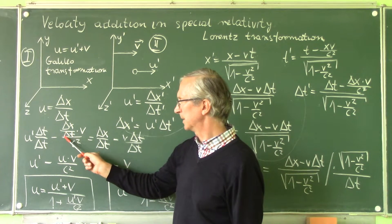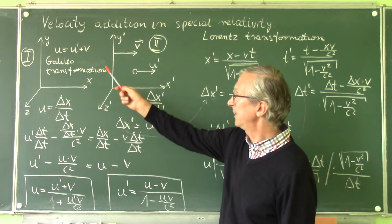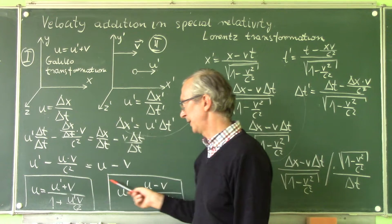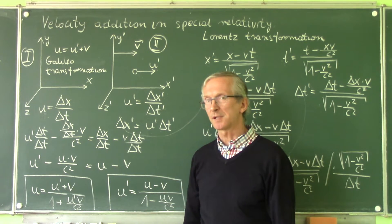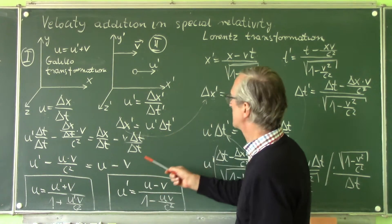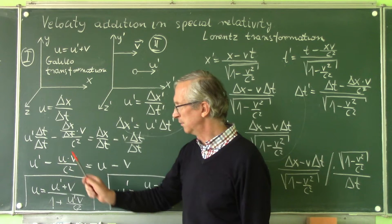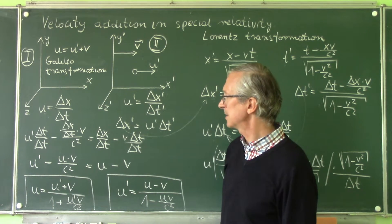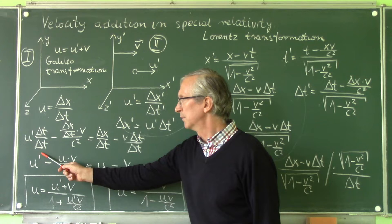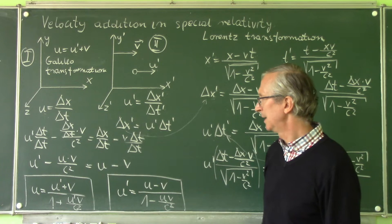Delta x divided by delta t is u — it is the velocity of this object measured in the first frame of reference. So we have this equation, and now we have almost solved our problem. It's enough to transform this equation to calculate the velocity measured in the first frame of reference, and it's done here, or to calculate the velocity measured in the second frame of reference, and it's made here.